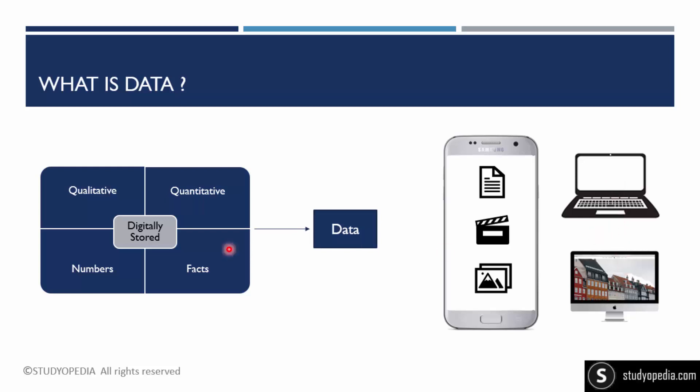Here you can see all these are digitally stored in a form which is called data. Qualitative can be your messages like 'hi, how are you, hope you're doing well' on WhatsApp. You can say quantitative are numbers and facts, which can be any fact. These all are digitally stored which we call data.